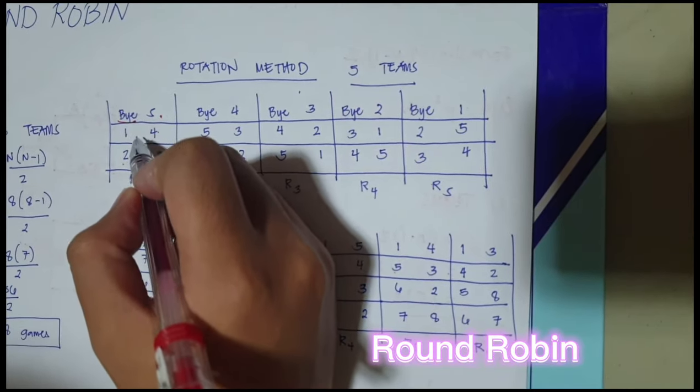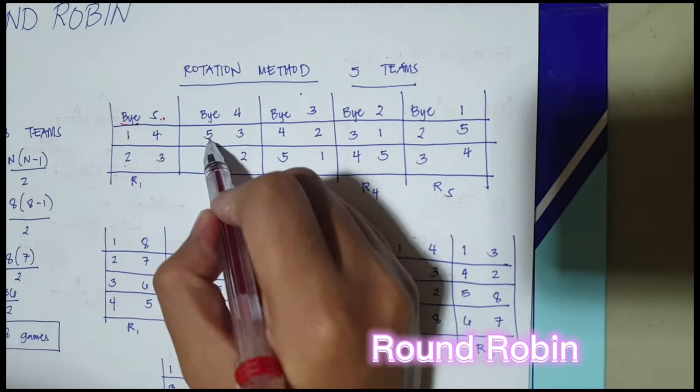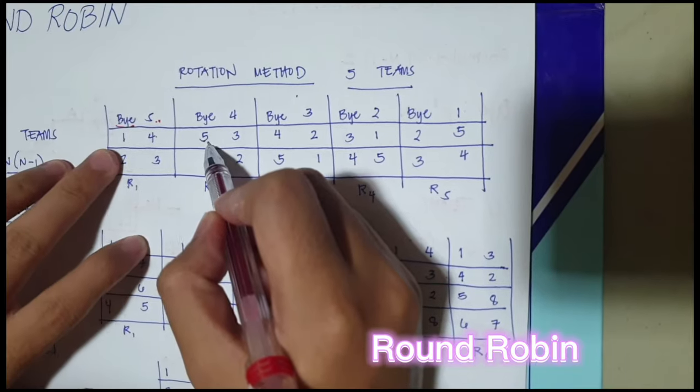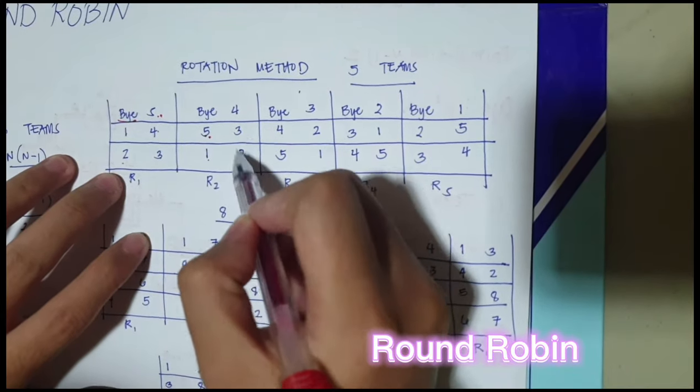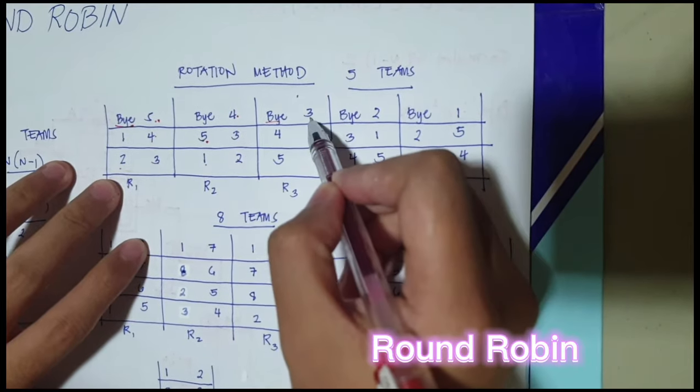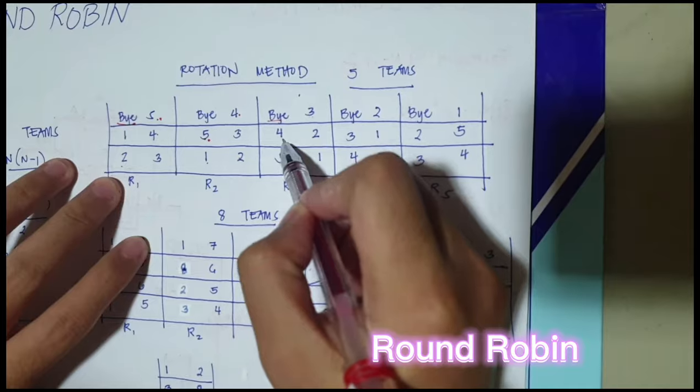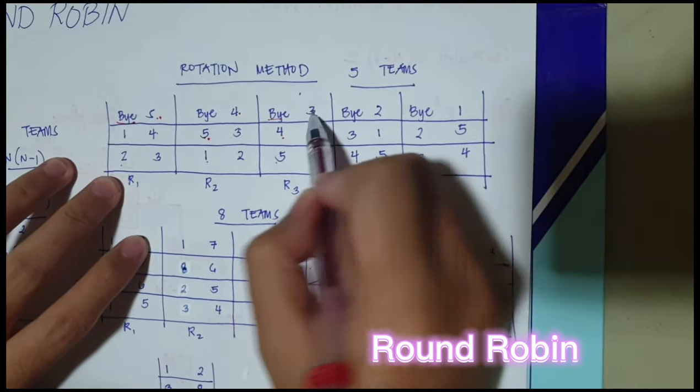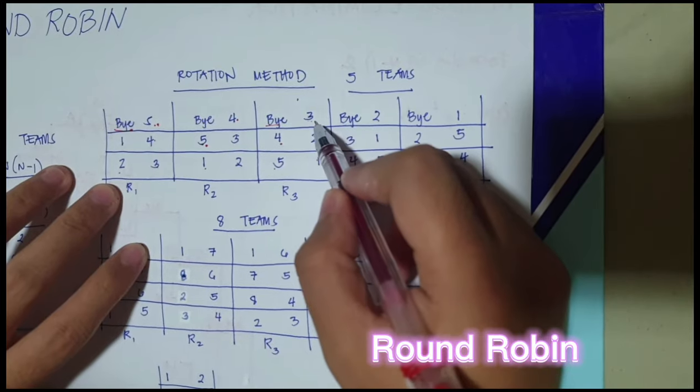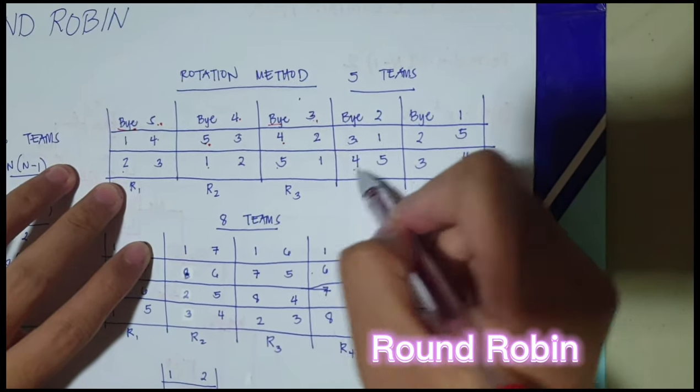For the next round, so by, so 5 is now below by. So 5, and then to be followed by 1, 2, 3, 4. Then for the next round, by, 4, 5, 1, 2.